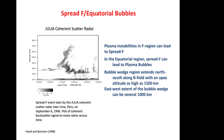Plasma instabilities in the F region can lead to spread-F irregularities. In the equatorial region, spread-F can lead to plasma bubbles at night. Plasma bubbles are vertically elongated wedges of depleted plasma that drift upward from beneath the bottom-side F layer to altitudes as high as 1,500 kilometers. A depleted wedge extends north-south along the B field and east-west by up to several thousand kilometers — basically looking like upside-down watermelon slices. The plasma density in the bubble can be up to two orders of magnitude lower than the surrounding medium.